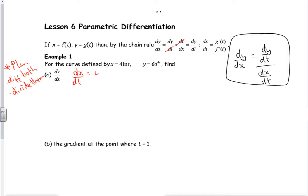Right, so let's have a look. dx/dt will be four times by one over t, because if you differentiate log t it's one over t, so it's just four over t. dy/dt, so that's going to be six times by four lots of e to the 4t.